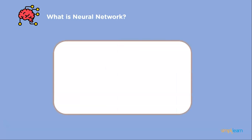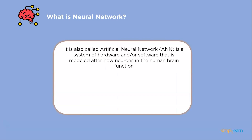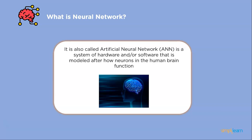What is a neural network? In simple terms, an artificial neural network can be called a system of hardware and software framed after how neurons in the human brain function. Our brain has billions of neurons that are all interconnected. Neural networks contain three major layers: an input layer, an output layer, and a hidden layer.